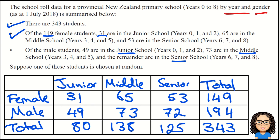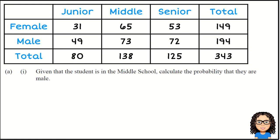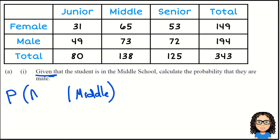You'll notice I haven't even read the actual question I need to calculate yet — I'm simply processing the information and turning it into a table. Now let's look at the question. It says 'given' — as soon as I see that word 'given', that tells me conditional probability. So: given that the student is in middle school, we want to find the probability that they are male.